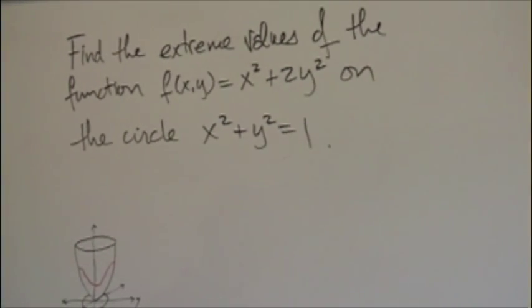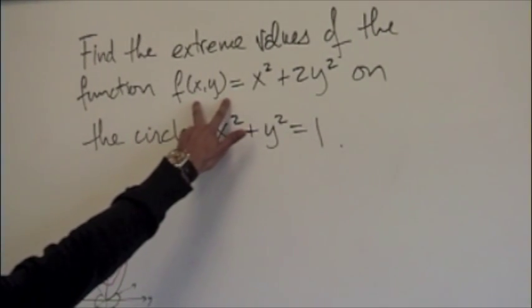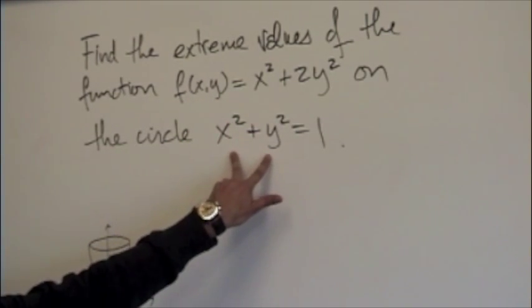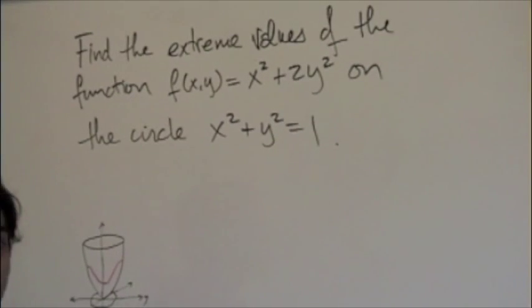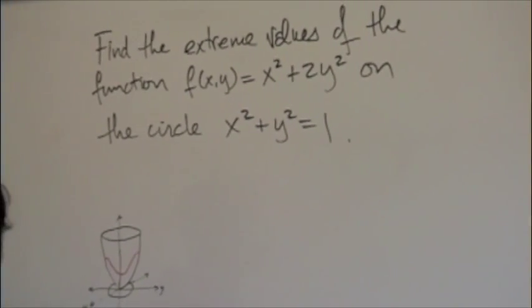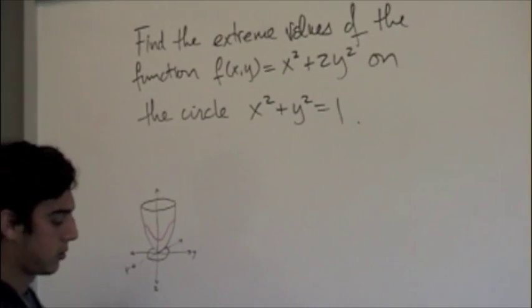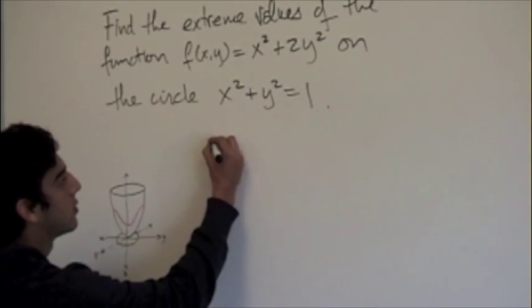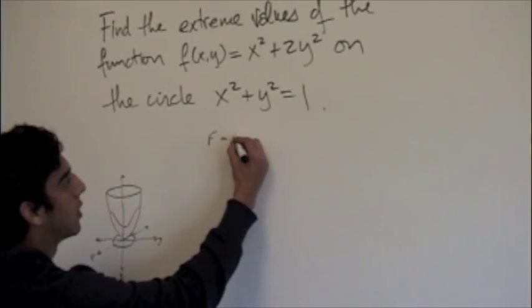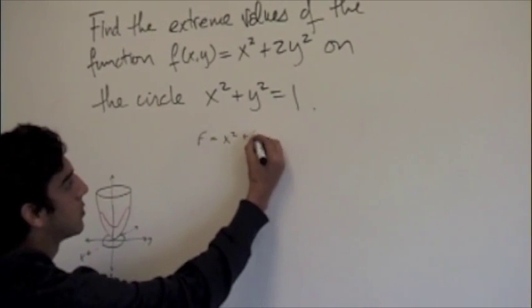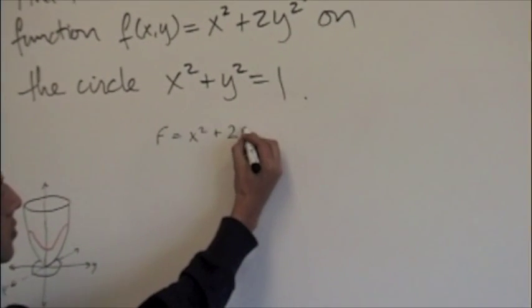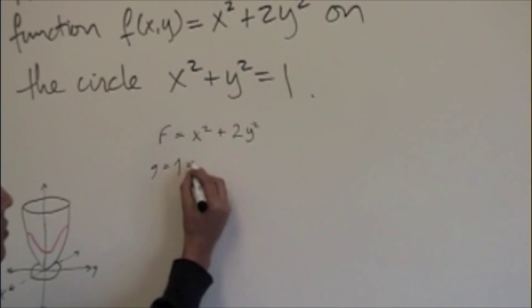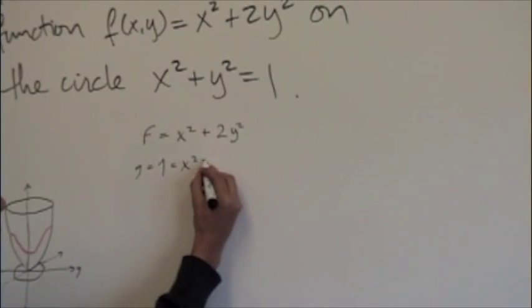For this problem we have our general function f(x,y) and our constraint function g(x,y). We're going to use Lagrangian multipliers with two variables. The general function is x² + 2y², and our g will be 1 = x² + y².